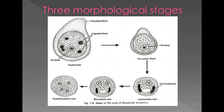Before forming the cyst, the trophozoite forms a pre-cyst under unfavorable conditions. The cyst wall is secreted, and cytoplasm and nuclear material start condensing, storing food as a glycogen body. The trophozoite converts to pre-cyst, then to a uninucleate cyst with a single nucleus, two chromatoid bars, one central glycogen mass as food storage, and a thick outer cyst wall.